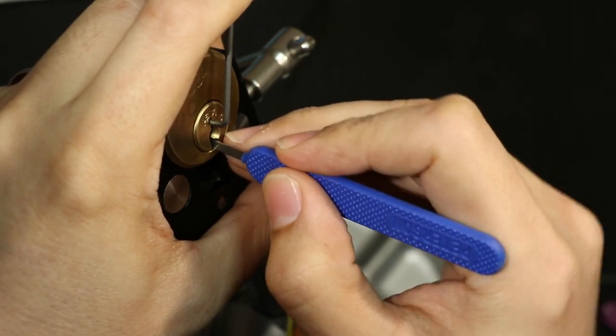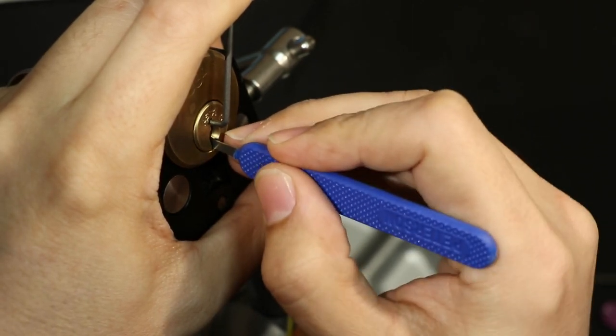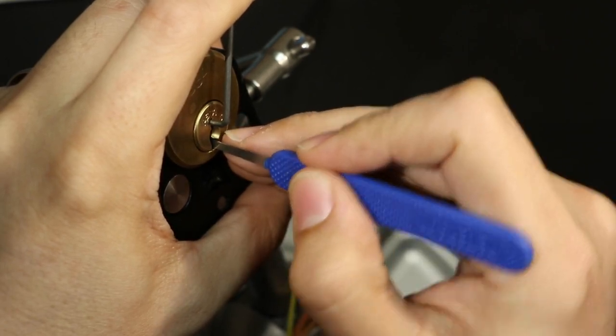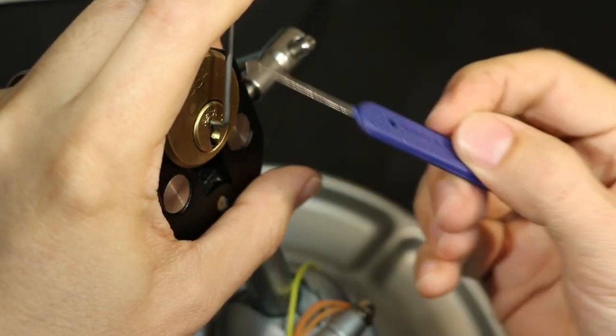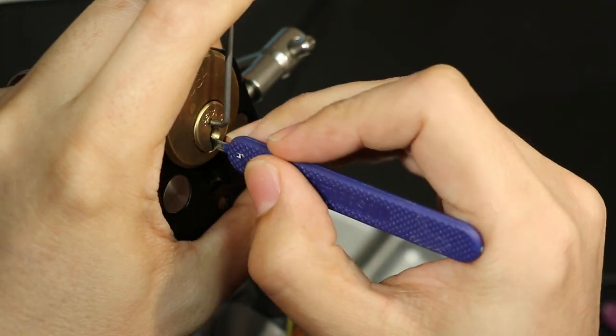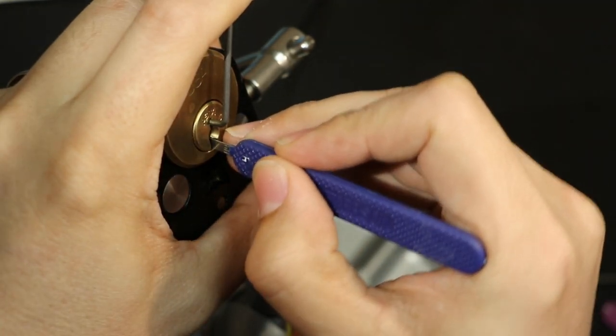And we're just jiggle testing. Number five, I think that is, or six. They all feel jiggly. Actually, I don't know why I'm using this. I kind of need a deeper hook for this, I think, so I can get on each pin individually.